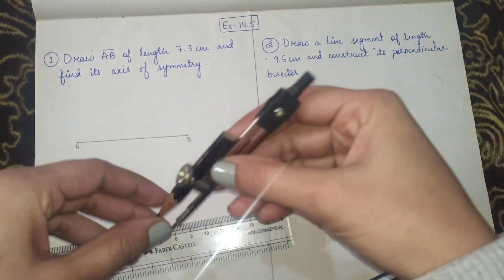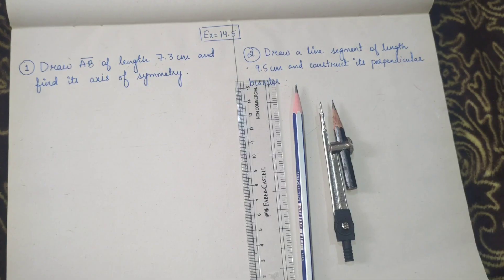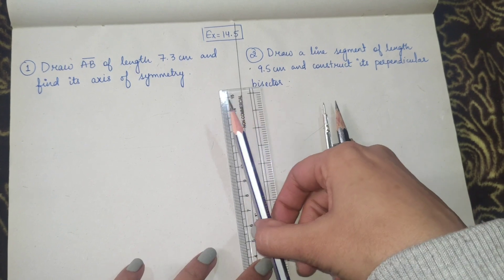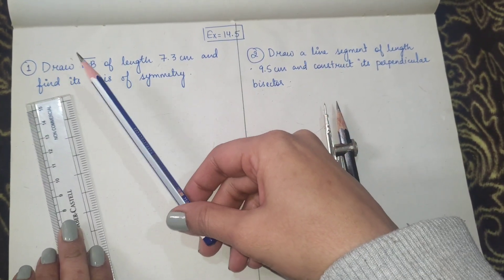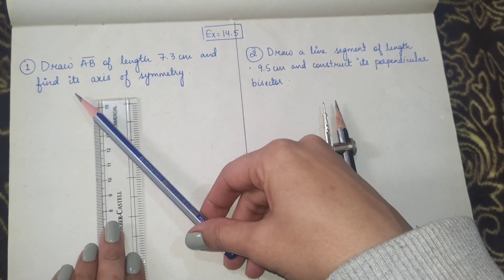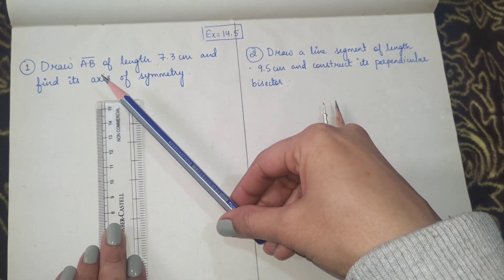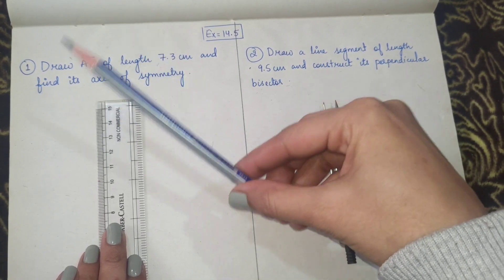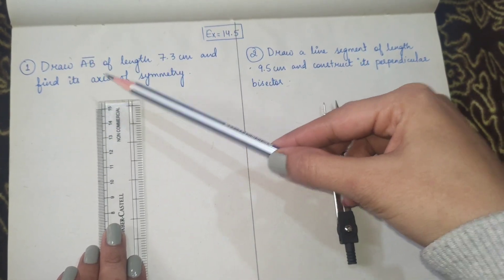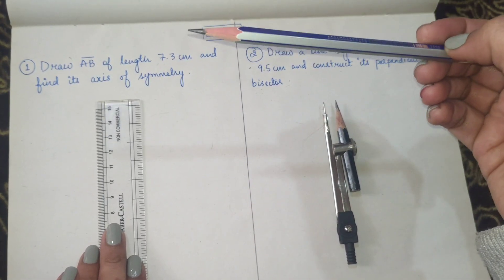Good evening everyone. Today we'll begin with exercise 14.5 question one. Draw line segment AB of length 7.3 centimeters and find its axis of symmetry. Axis means line, and symmetry means when you get the same things on both sides of a line. So axis of symmetry is the same as perpendicular bisector.